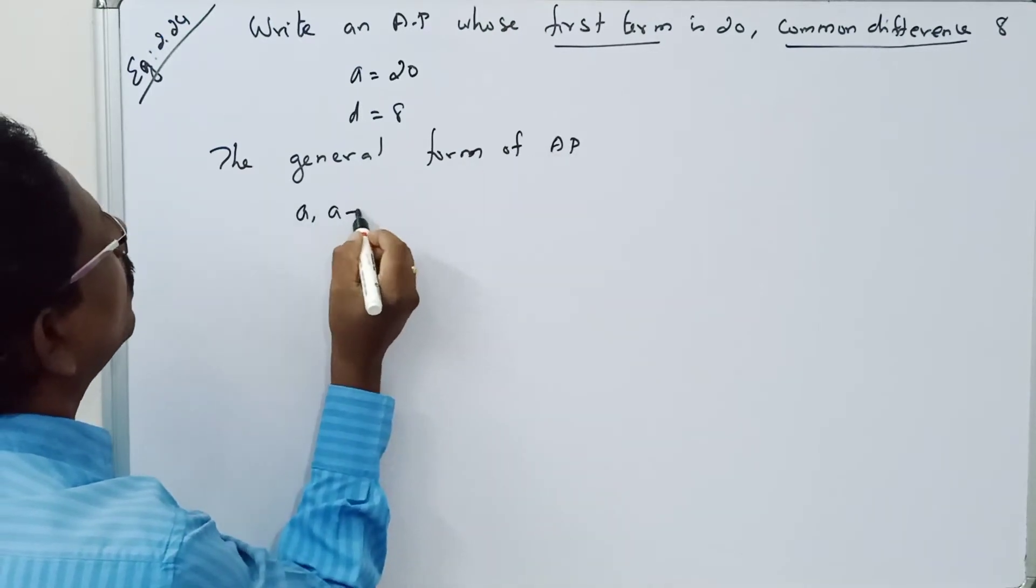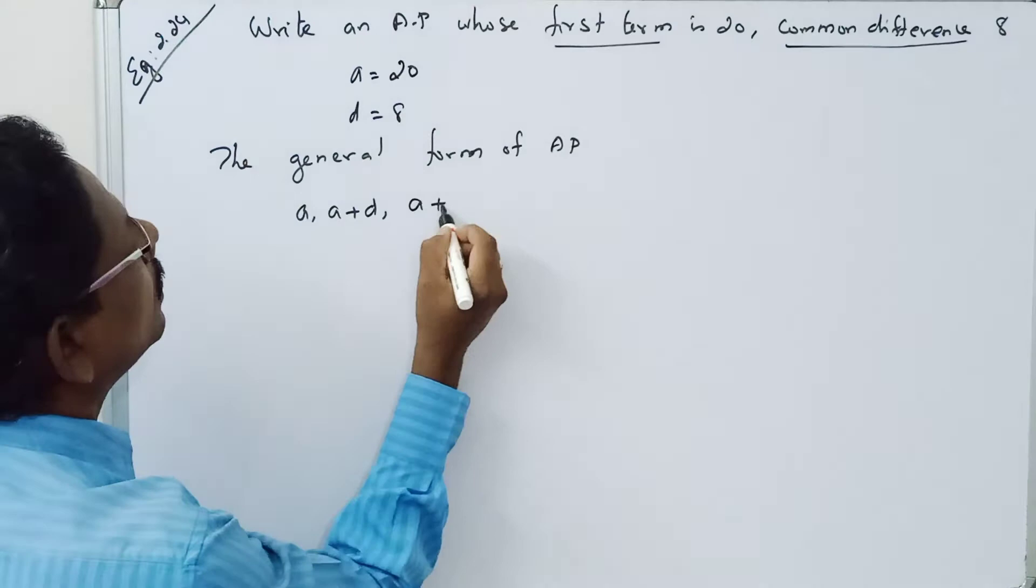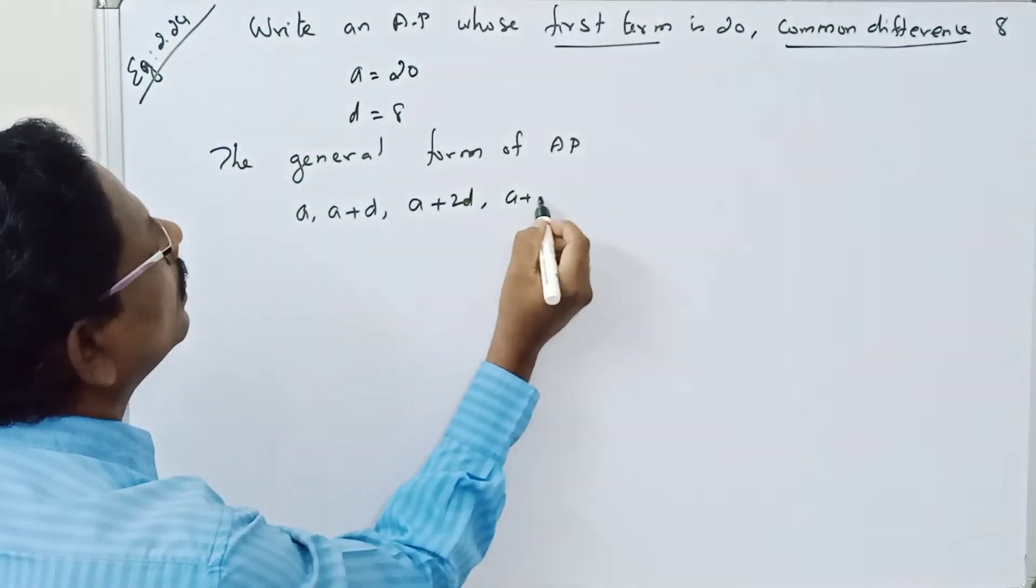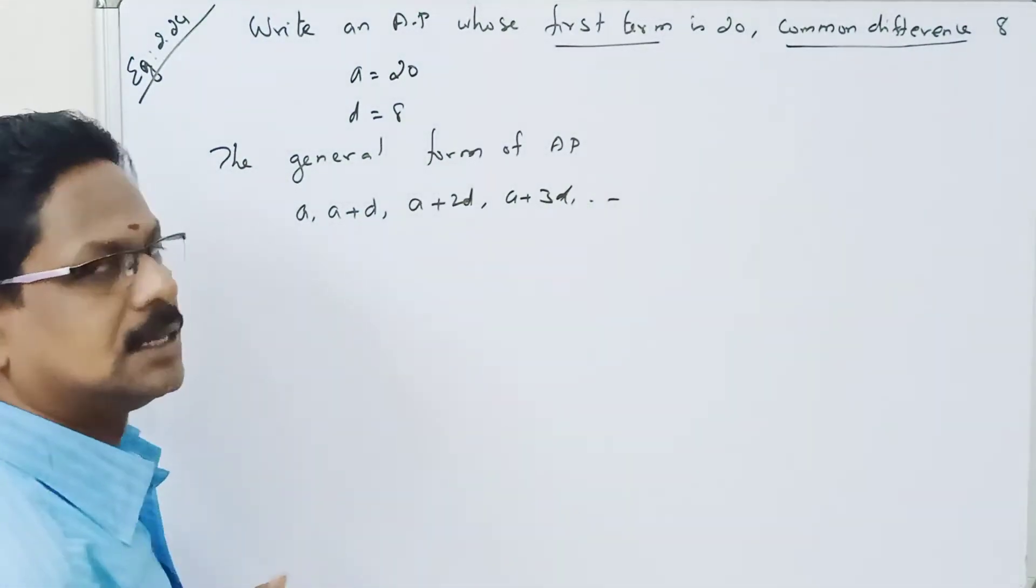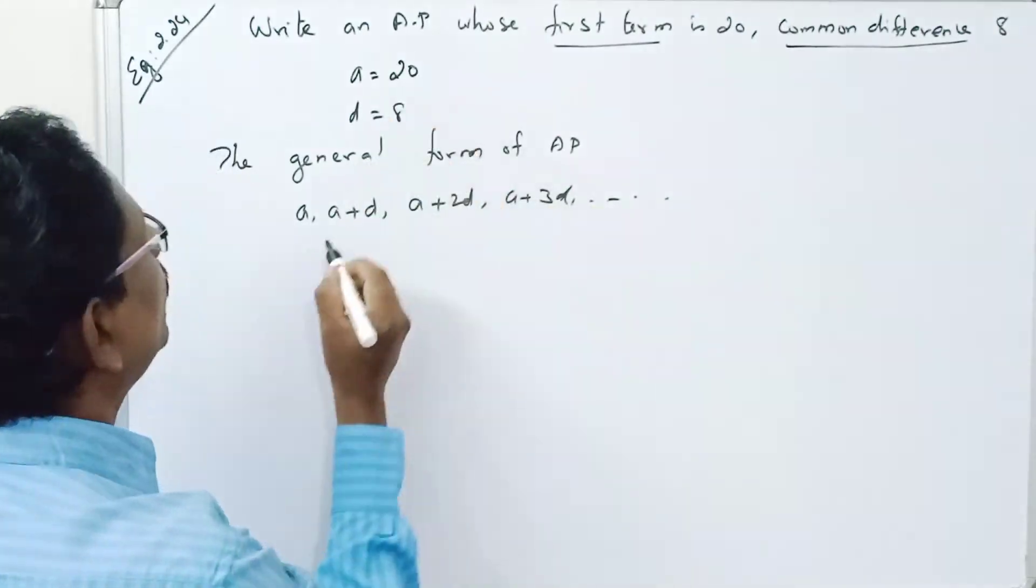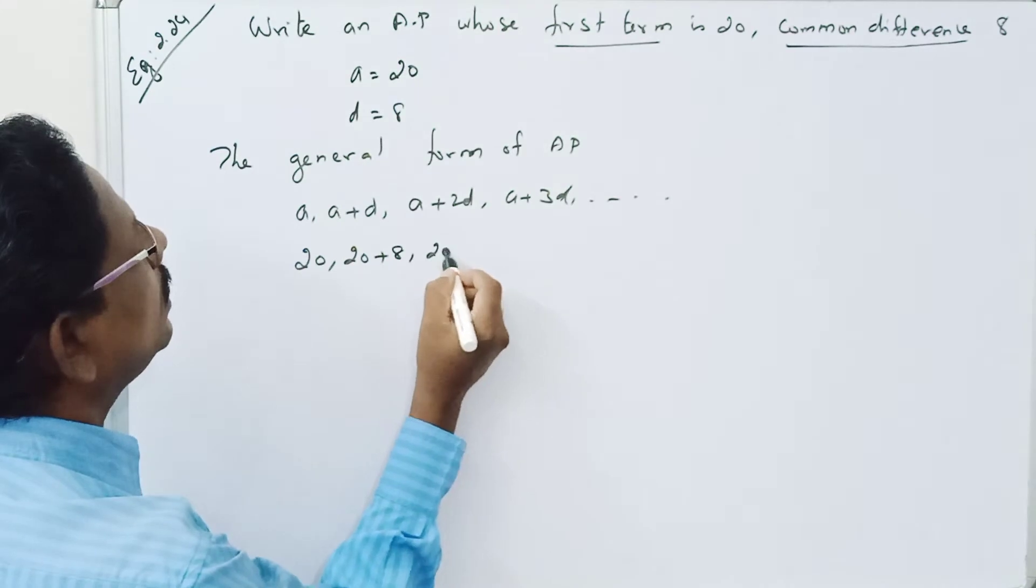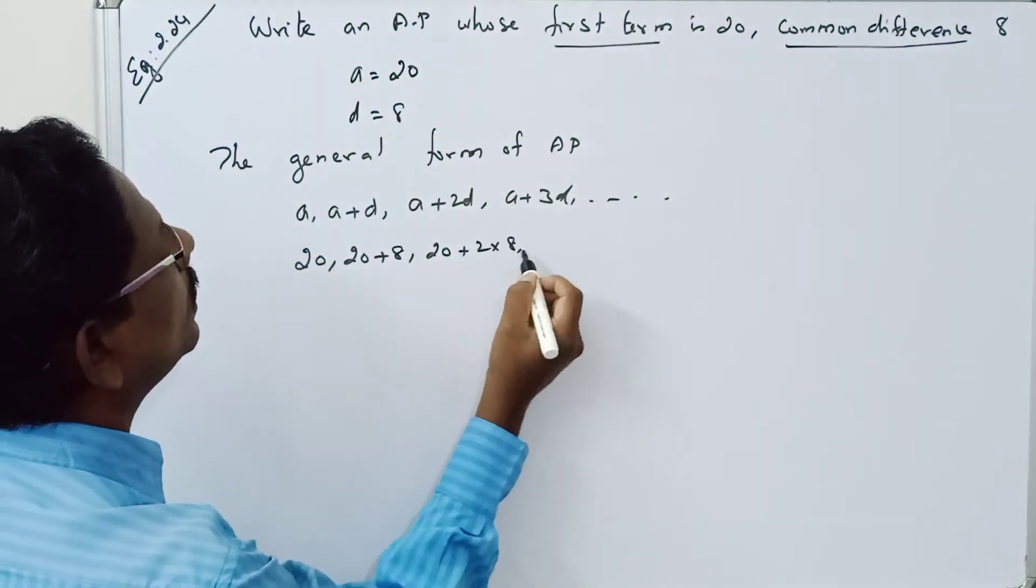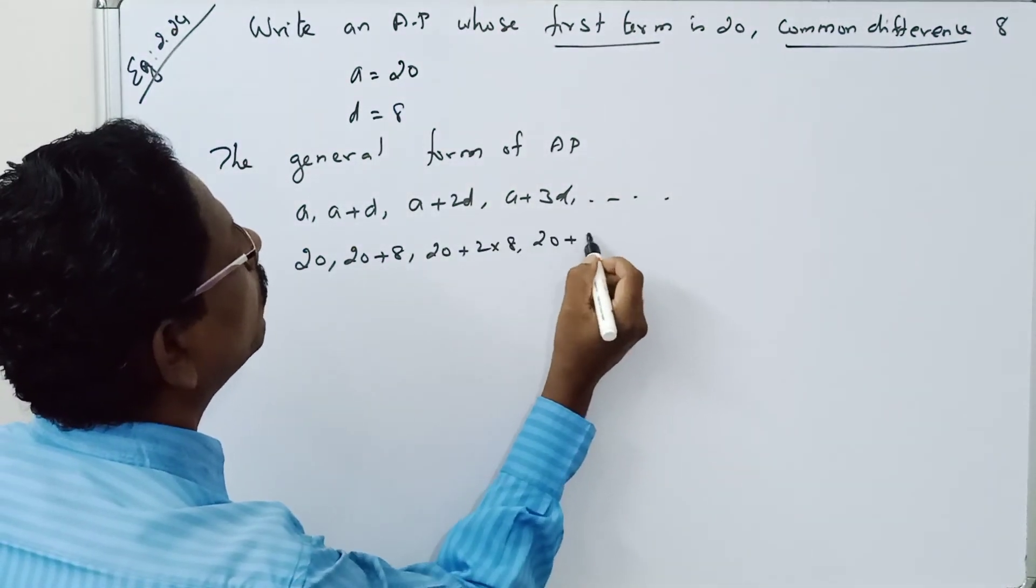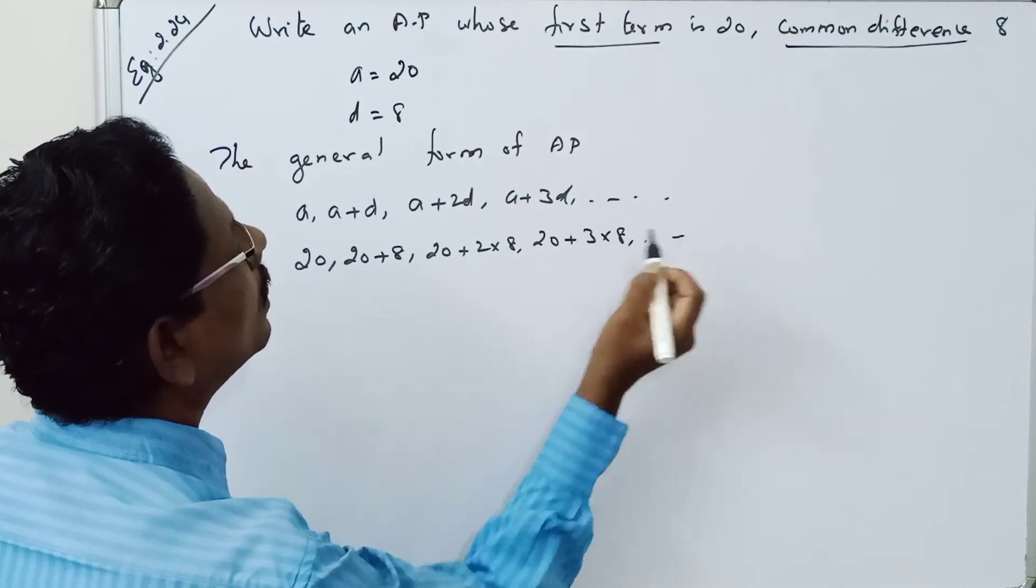is: a, a plus d, a plus 2d, a plus 3d, etc. So we know a is 20, 20 plus 8, 20 plus 2 into 8, 20 plus 3 into 8, etc.